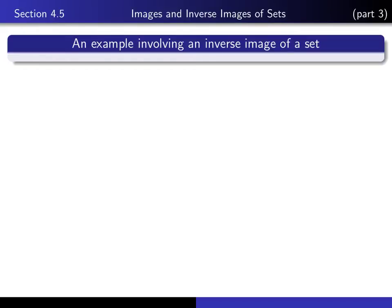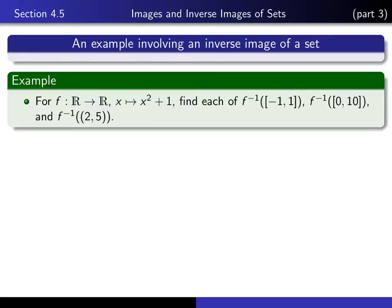This is part 3 in our series of lectures on section 4.5. In this lecture we'll do an example involving an inverse image of a set. This is the same function from R to R that we considered in the previous lecture, f of x equals x squared plus 1. But this time we're going to find the inverse image of this set, this set, and this set.